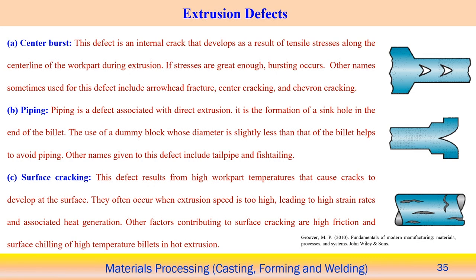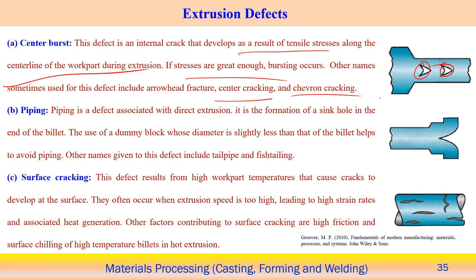Extrusion processes can be associated with different types of defects. One is the center burst — cracks that develop at the center of the extruded product due to tensile stress along the centerline during extrusion. If the stress is great enough, a burst occurs at the center line. This defect is also known as center cracking or arrowhead cracking.